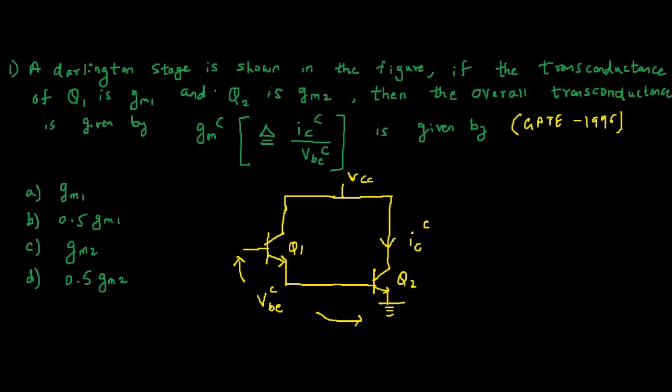A Darlington stage is shown in the figure. If the transconductance of the first BJT Q1 is GM1 and transconductance of second BJT Q2 is GM2, then the overall transconductance is given by GM collective, which is equal to IC collective, that is the collector current of second BJT Q2 upon VBE collective, where VBE collective is the sum of base to emitter voltage of Q1 and Q2.